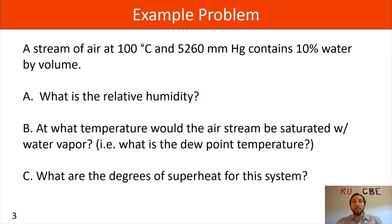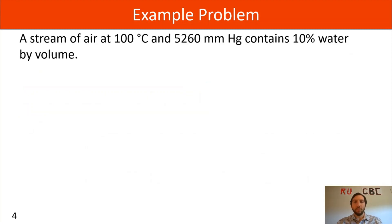We're first going to work on part A, what is the relative humidity of the system. We have this air stream at 100 degrees Celsius, 5260 millimeters of mercury, containing 10 percent water by volume. As you might remember from part one of lecture 10, our relative humidity is equal to the partial pressure of water divided by the vapor pressure of water.